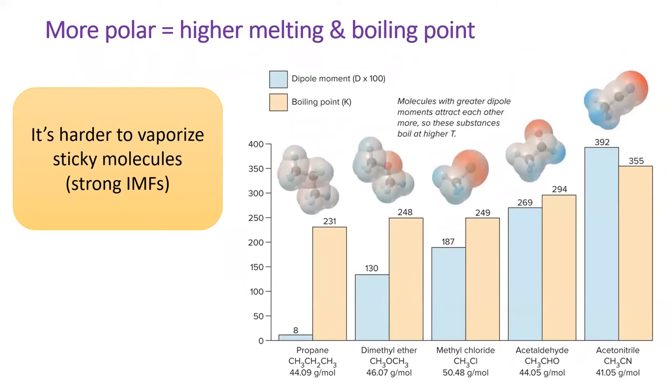The more polar a molecule is, the more it sticks to the other molecules in the liquid phase. This causes the boiling point to increase with increasing polarity. The figure to the right shows five different substances with similar molecular weights. However, they have very different polarities, which is illustrated by the blue bars. The yellow bars represents a substance boiling point, and you can see that as the polarity increases, the boiling point increases as well.